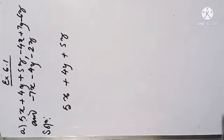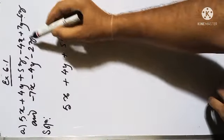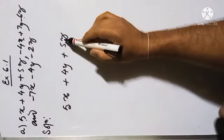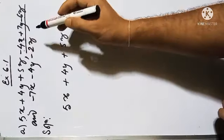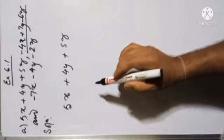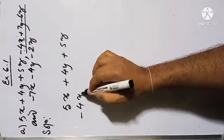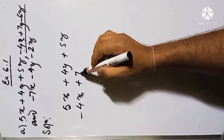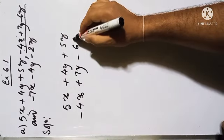First, let me write the first expression: 5x plus 4y plus 5z. In the second expression we have minus 4x plus 7y minus 6z. In the first term we have x, in the second term we have y, in the third term we have z. For the second expression, the first term is minus 4x, so let me write minus 4x in the first column. Next we have y, so plus 7y, and at the last we have minus 6z.